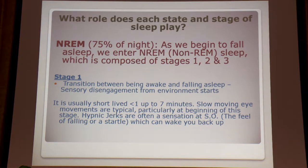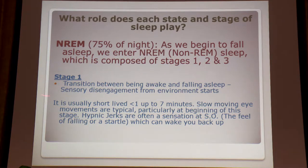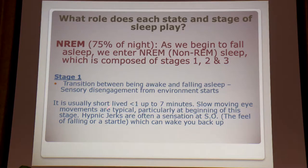When we begin to fall asleep, we enter non-REM: stage one is transitional, stage two is about 50% of the night, then delta. Stage one is the transition between being awake and falling asleep — sensory disengagement starts, you can't hear, see, or smell. It lasts one to seven minutes with slow moving eye movements. And there are things called hypnic jerks — we've all had them.